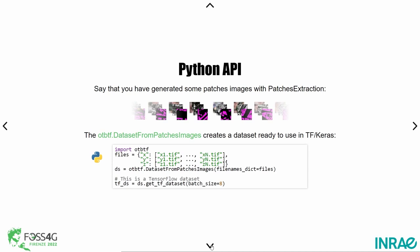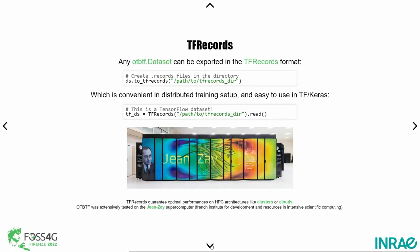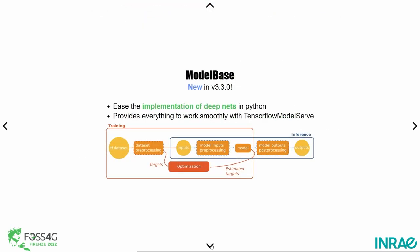Typically, you extract patches using the patch extraction application to get some GeoTIFF files and build a TensorFlow-compliant dataset. The dataset object reads images on the fly from the filesystem — this is not very efficient, but if your bottleneck is computation, it is okay. For cloud or cluster computing, you should use the TF record format, which you can quickly convert from the dataset. We have extensively tested this framework on the supercomputer of the French Institute for Development with around 100 GPUs, and it is truly performance-grade.